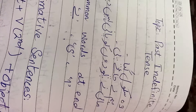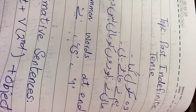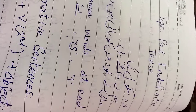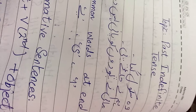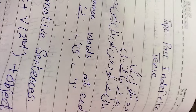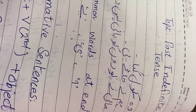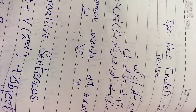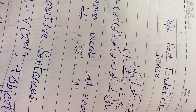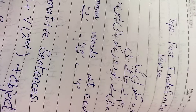When do we use past indefinite tense? We use past indefinite tense to write about something which has happened in the past. For example, we will use past indefinite tense for writing stories, because stories always happen in the past. So we will use past indefinite tense to write any story.